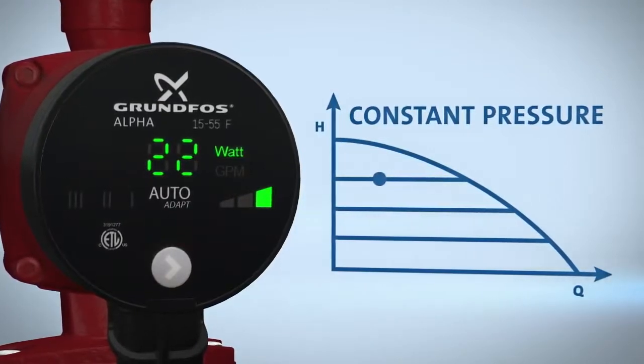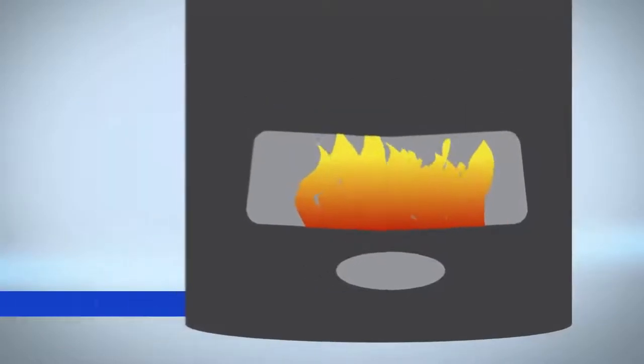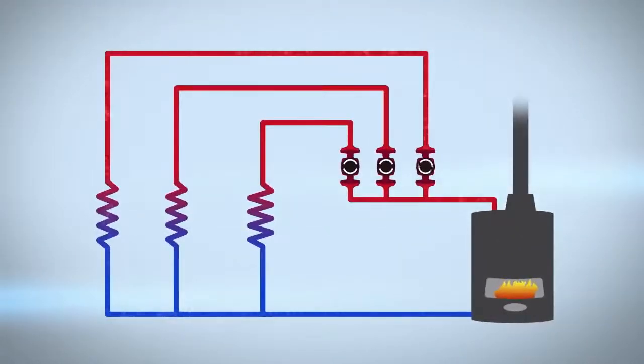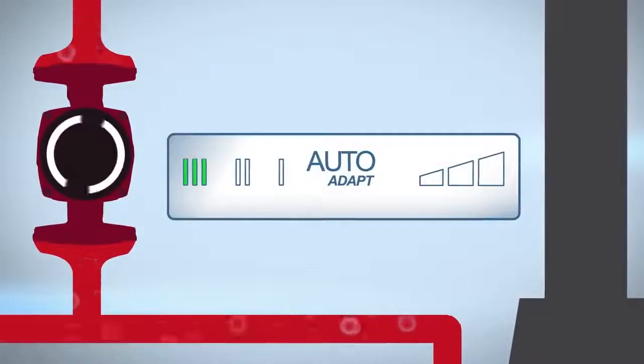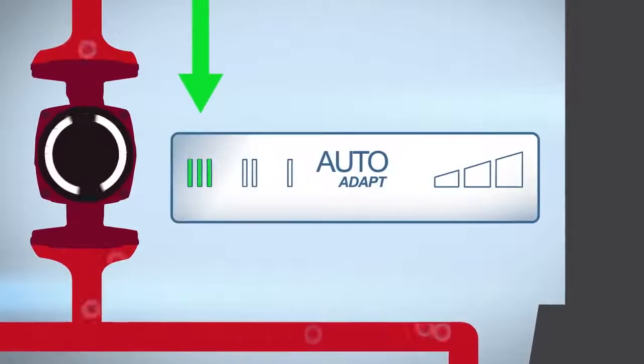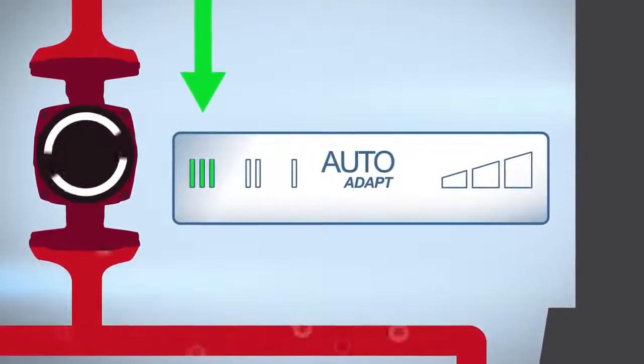Before setting the pump to auto-adapt, ensure the line is clear of any air pockets, also known as purging the pump. To do this, place the pump on speed 3 and begin purging the pump. This process should be done to each heating loop individually.